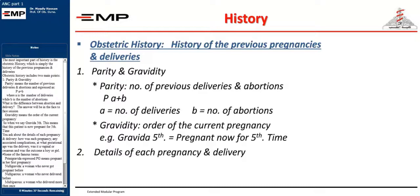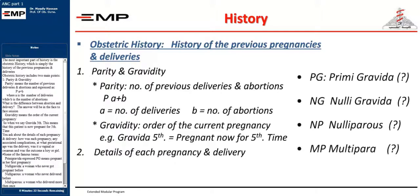Parity means the number of previous deliveries and abortions, expressed as P, A and B, where A is the number of deliveries and B is the number of abortions. Gravity means the order of the current pregnancy. When we say gravida fifth, this means the patient is now pregnant for the fifth time. You ask about the details of each pregnancy and delivery: how was each pregnancy, any associated complications, at what gestational age was the delivery, was it vaginal or cesarean, and was the outcome a boy or girl. Famous terms include: primigravida (P.G.) — pregnant in her first pregnancy; nulligravida — a woman who never got pregnant before; nulliparous — a woman who never delivered before; multiparous — a woman who delivered more than once.